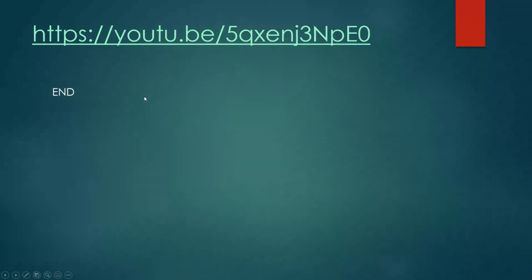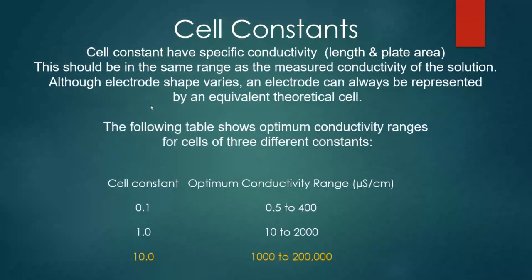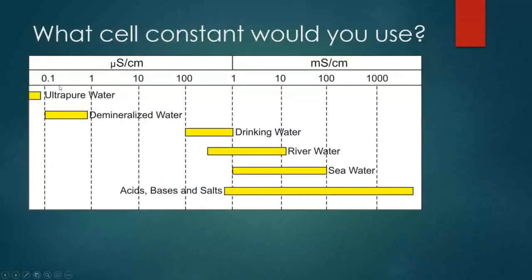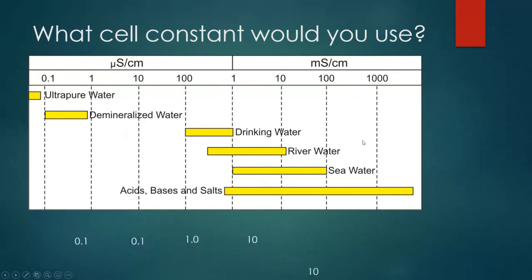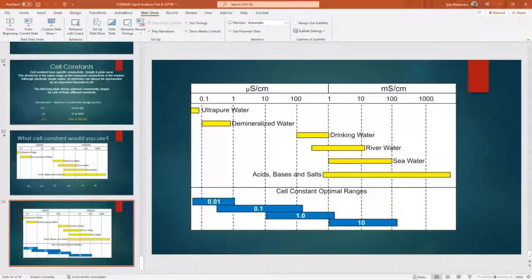That's the end of the video portion. At the end there are some reference tables showing cell constants for different processes. Small cell constants are used for low-conductivity solutions, large cell constants for high-conductivity solutions. You may see exam questions asking which cell constant to use for seawater, ultra-pure water, or drinking water. You should have a general idea of where to apply a certain cell constant. That is the end of this lecture — thanks for joining.